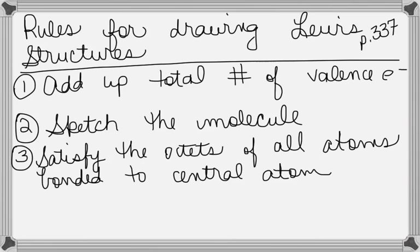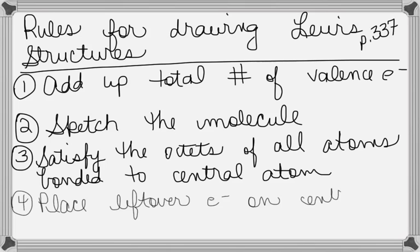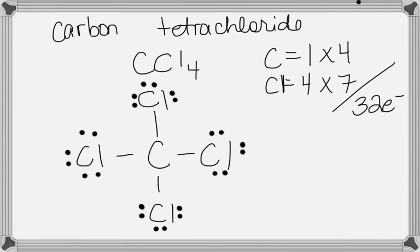Step four is place leftover electrons on the central atom. Place leftover electrons on the central atom. Now, look at your structure. I'm going to flip slides. Count the dots, and don't forget to count the bonds. How many electrons are in the bond? Two. Count up all the dots and all the bonds that you've got drawn, and tell me how many electrons we have right now.